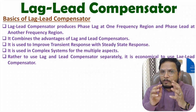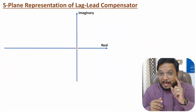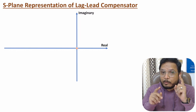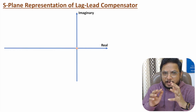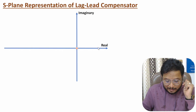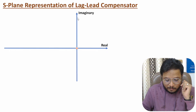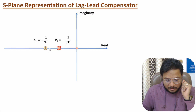Now I will explain the s-plane representation of the lag-lead compensator. To design a lag compensator we need one pole and one zero. The value of the pole is minus one over beta-T1 and the value of the zero is minus one over T1. The pole is to the right of the zero, which is only possible if beta is greater than one.